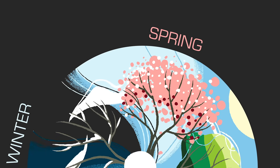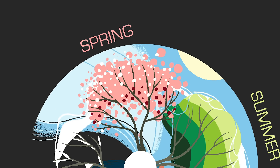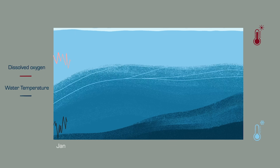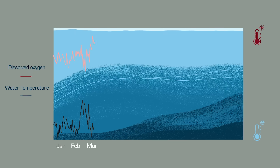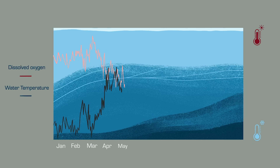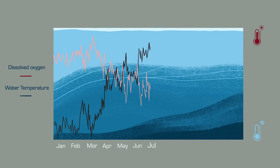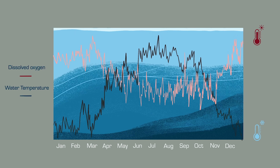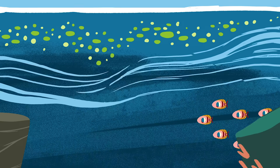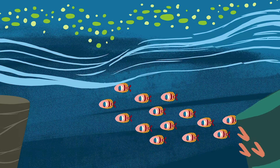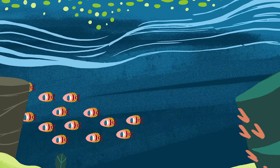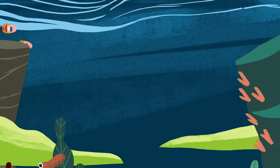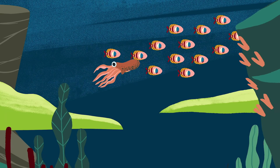Over time, this can reduce the oxygen content to less than 2 mg of oxygen per litre, creating an uninhabitable dead zone. There are rare bodies of water that rely on natural eutrophication.